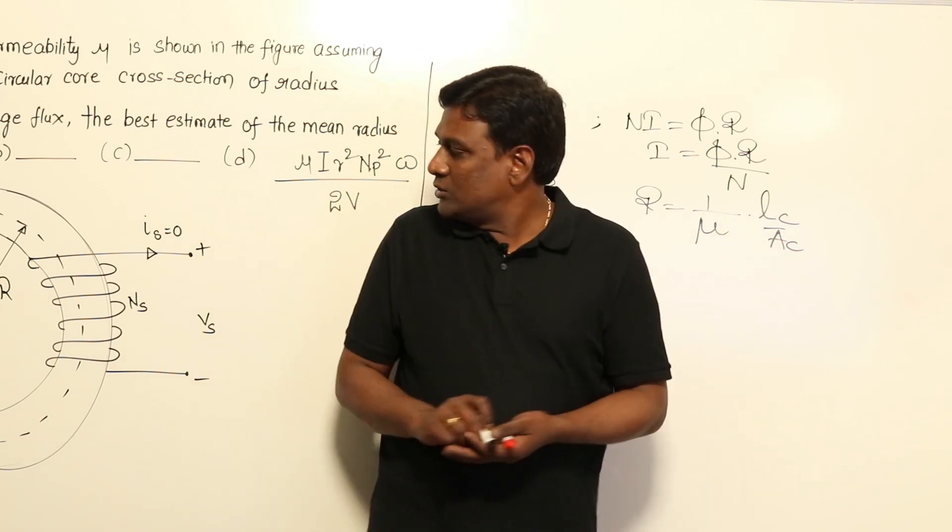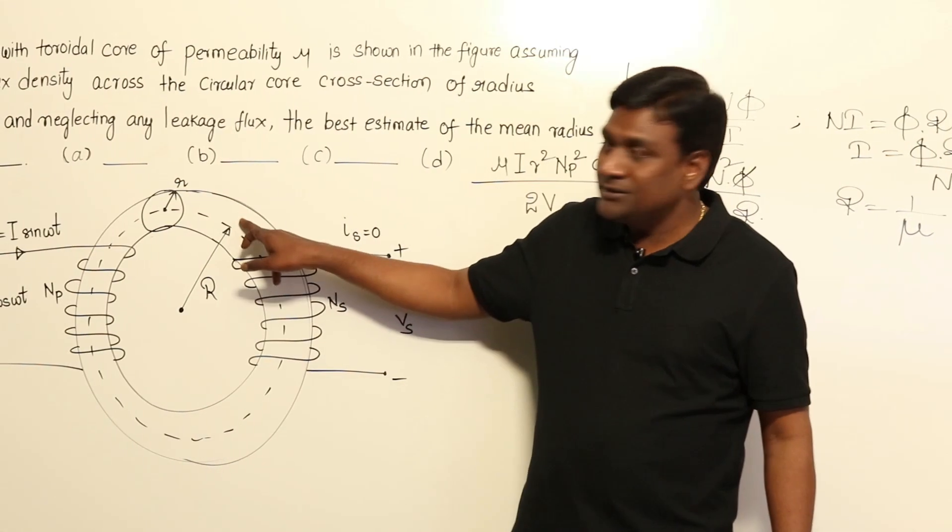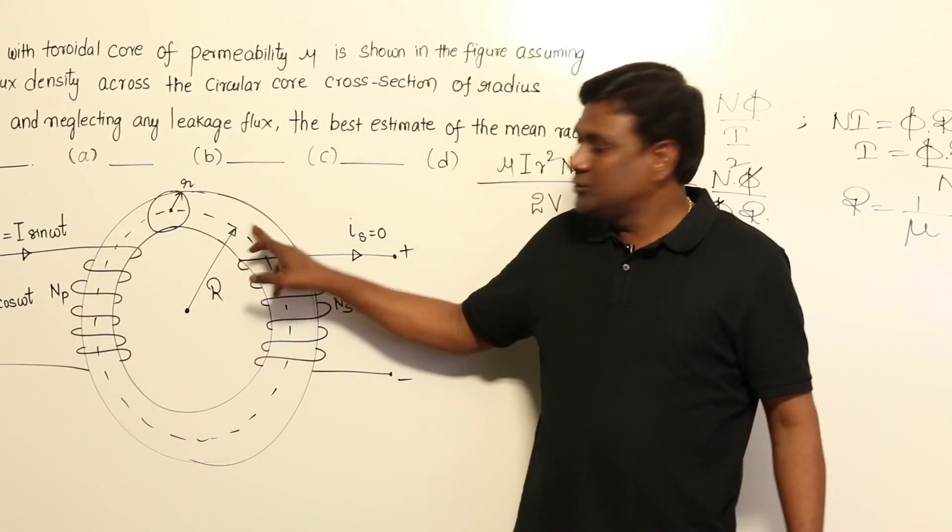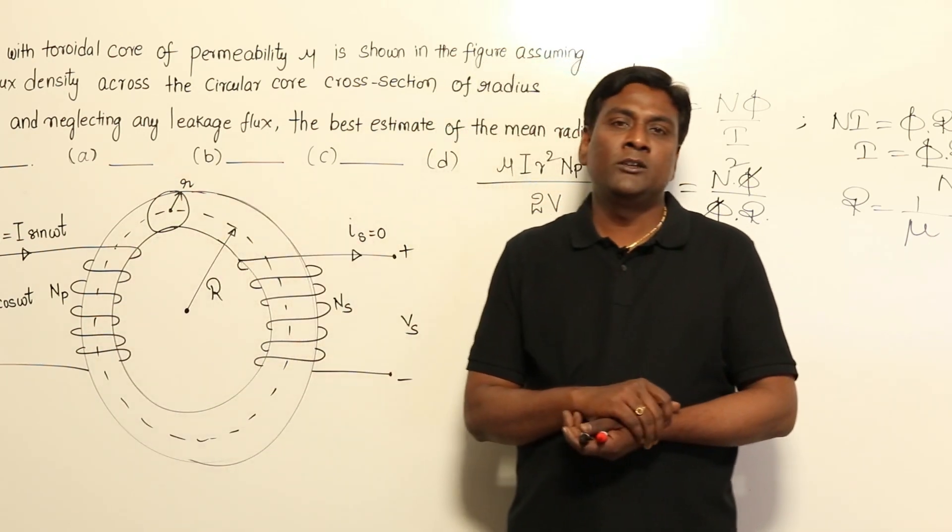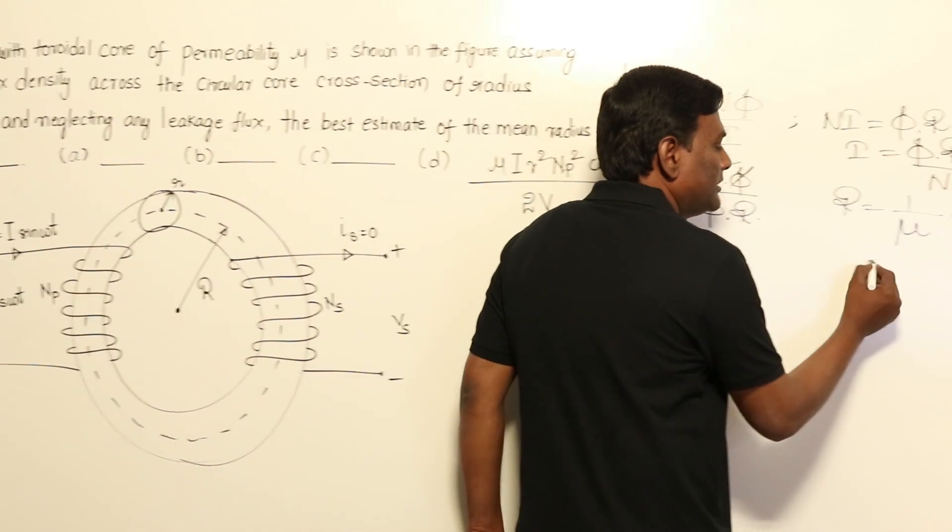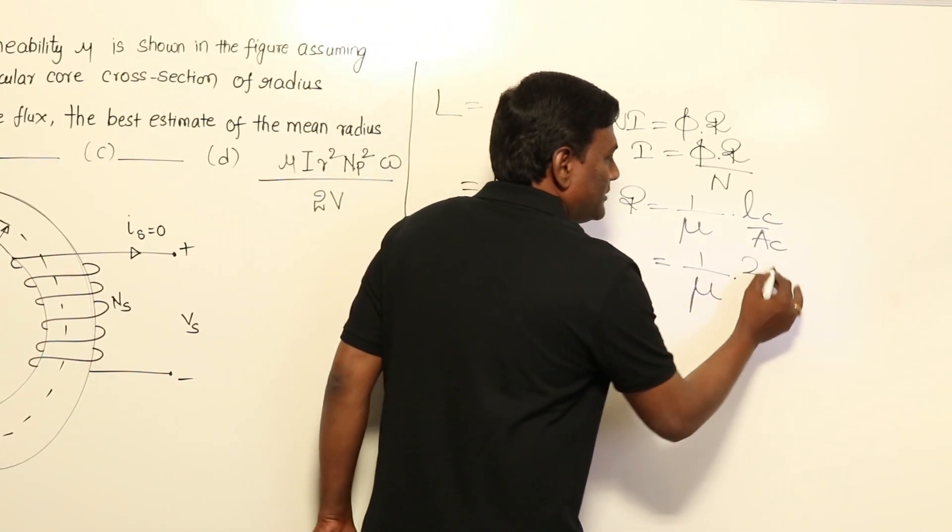What is the length of the core or length of the flux path? If you see in the diagram, if mean radius is R_m, the length of the flux path is going to be 2πR_m.